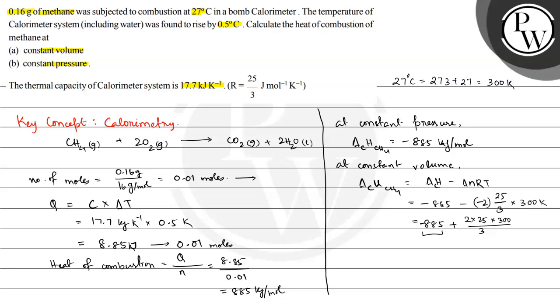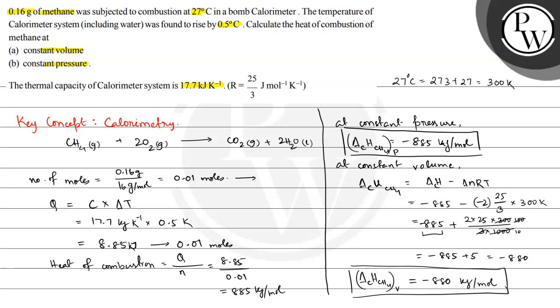This simplifies: 3 cancels, leaving 100, and dividing by 1000 gives 10. Then 2 × 25 = 50 divided by 10 = 5. So this is -885 + 5 = -880. Heat of combustion of CH₄ at constant volume equals -880 kJ/mol, and heat of combustion of methane at constant pressure is -885 kJ/mol. This is the required answer. I hope you understood the concept well. Best of luck.